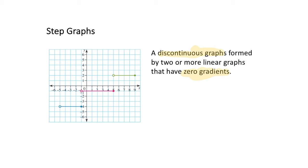None of the lines are joining or intersecting, confirming they are discontinuous. They are also made up of straight lines, and a straight line is one that has a zero gradient. So our step graph is made up of discontinuous lines with a zero gradient, meaning they are all horizontal.